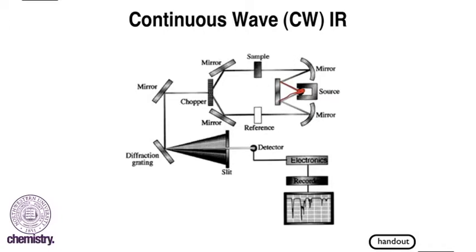Half of our beam is going to bounce off a mirror and pass through what we call a reference sample. This is because when we collect an IR spectrum of a sample, if we have gases in the room that can interfere with our IR spectrum and trick us into thinking that the gases are part of the structure of the molecule we're trying to analyze, we want to avoid that.